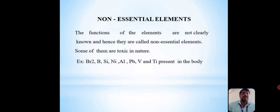Non-essential elements: the function of these elements are not clearly known and hence they are called non-essential elements. Some of them are toxic in nature. Examples are bromine, boron, silicon, nickel, aluminum, lead, vanadium and titanium present in the body.